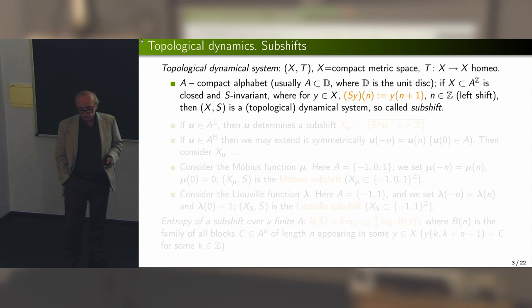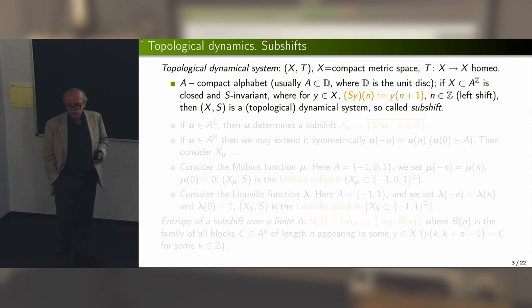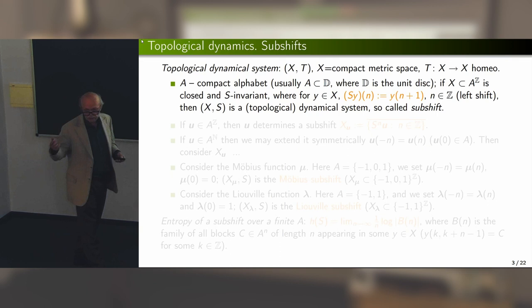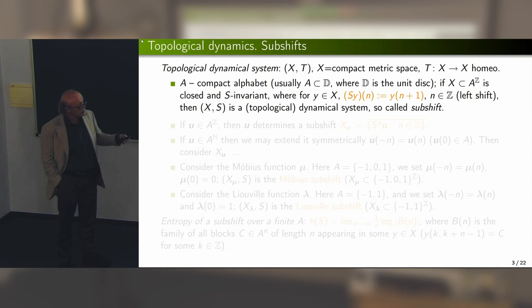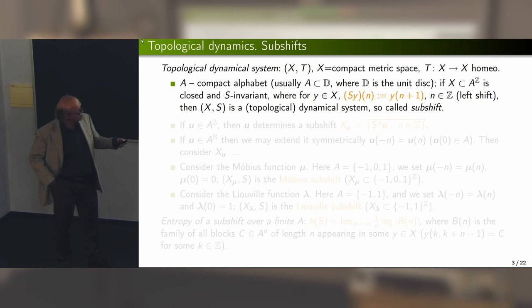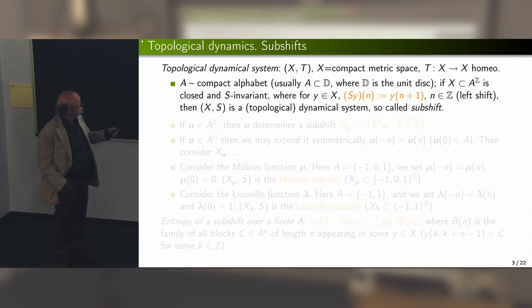What is a subshift? This will be a class of dynamical systems considered here. To speak about subshifts, we need an alphabet — for the purpose of this talk, a compact subset of the unit disk. We take the space of two-sided sequences with the product topology, which is a compact space. On that space, we have the natural action of the left shift. We then consider all subsets which are closed and shift-invariant; restricting the shift to such a subset gives a topological dynamical system. These are subshifts.